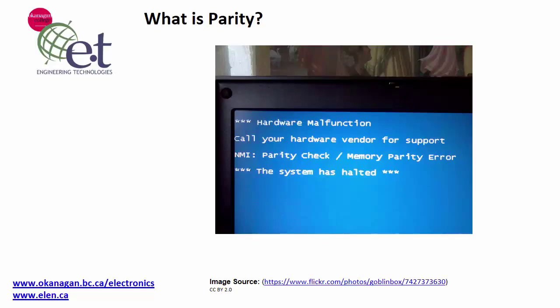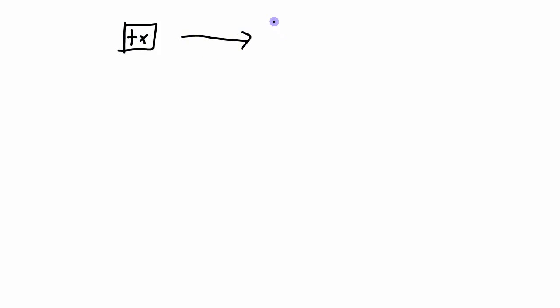Hi, David Williams here, and today I want to talk about what parity is and how it can be used to detect errors in data communication systems. In any data communication system, you're going to have a transmitter that is sending data over to a receiver. Due to noise in the system or failure of some components, some or all of those bits could be flipped or changed, resulting in bit errors.